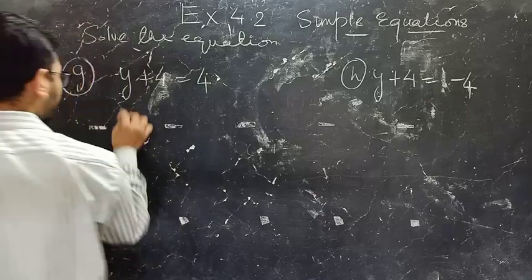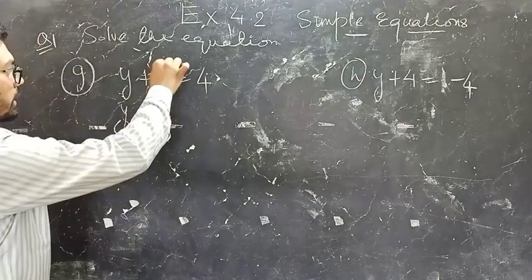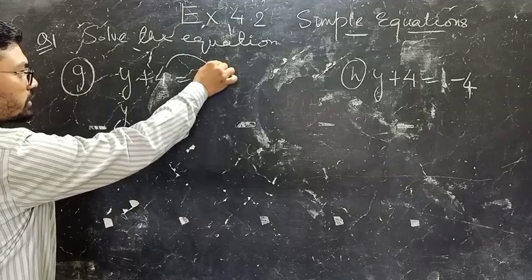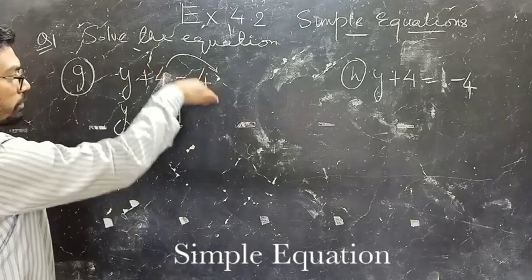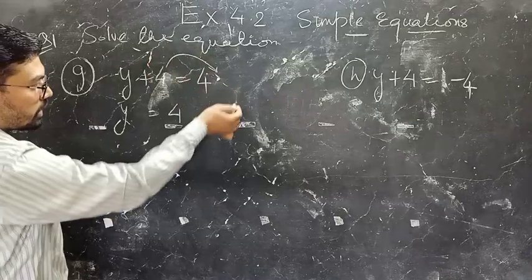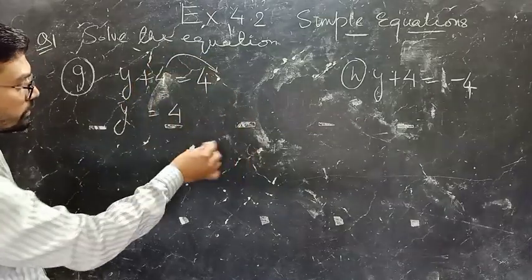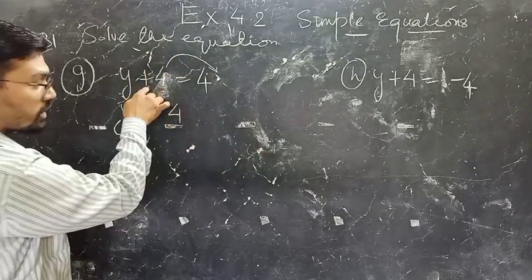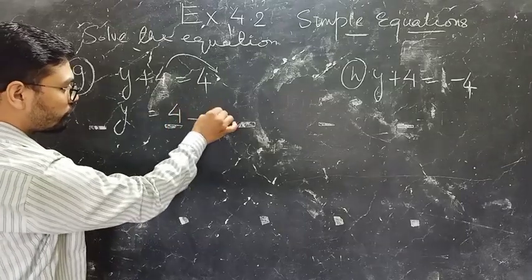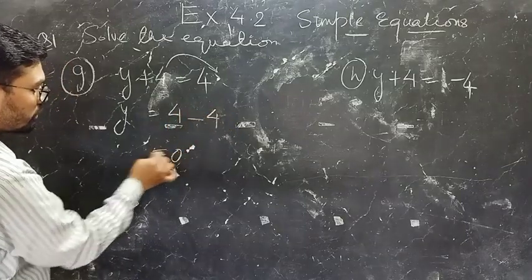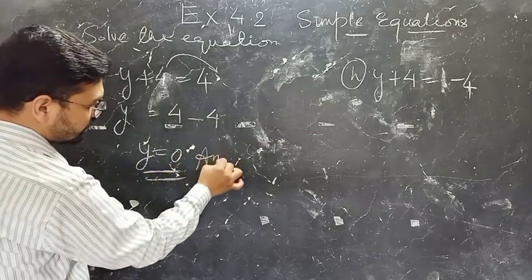In the very first step, take this 4 from LHS to RHS. When you take this 4 from LHS to RHS, the sign becomes negative — here it is positive, so it becomes negative 4. So minus 4 minus 4 gives 0 on the LHS. This is the solution and the answer.